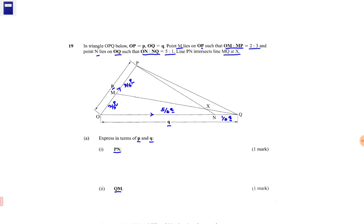We are required to express in terms of vector P and Q. To determine the value of vector PN from P to N, we will need to move from P to O. So PN is equal to PO plus ON. Now, PO is the negative of P, so this is negative P plus ON. ON is 5 over 6 Q.